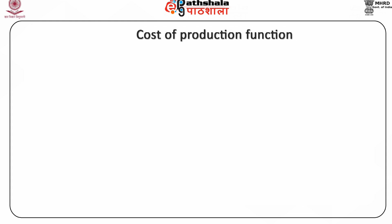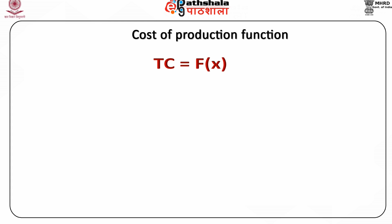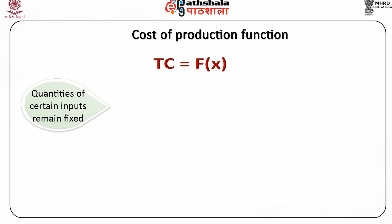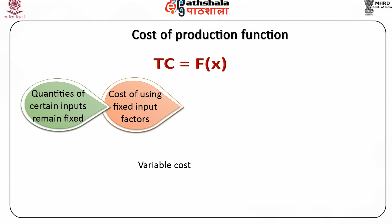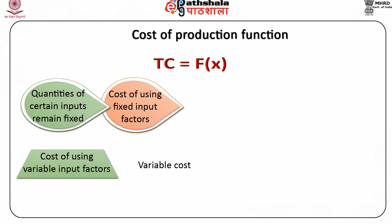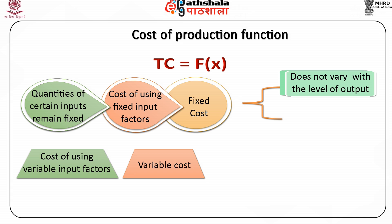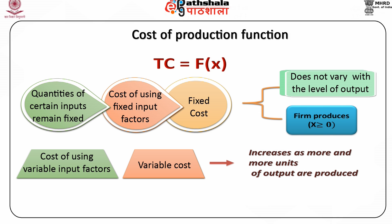The cost of production expressed as a function of the level of output x is termed as cost function, written as TC equals f(x). The short run cost function can be derived from the short run production function. In the short run, the quantities of certain inputs remain fixed while the quantities of others are variable. The cost of using fixed input factors is known as fixed cost, and the cost of using variable input factors is known as variable cost. Fixed cost does not vary with the level of output — it remains constant whether a firm produces 0 or x greater than 0 units of output. Variable cost increases as more and more units of output are produced; however, the variable cost is 0 when x equals 0, when the firm is not producing anything.